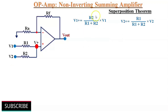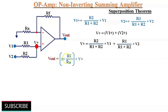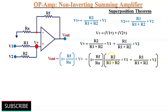So the total voltage V+ will be the sum of individual voltages: V+ = [R2/(R1 + R2)] × V1 + [R1/(R1 + R2)] × V2. As we know, Vout = (1 + Rf/Ra) × V+. So the final output voltage will be equal to (1 + Rf/Ra) multiplied by {[R2/(R1 + R2)] × V1 + [R1/(R1 + R2)] × V2}. This is the final output voltage of this non-inverting summing amplifier.